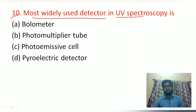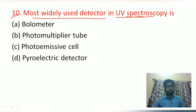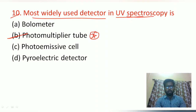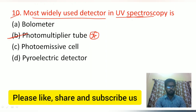The tenth question: the most widely used detector in UV spectroscopy is the photomultiplier tube. It is very important to understand the working principle of the photomultiplier tube. That is the end of this video — hope you liked it. Please like, share, and subscribe to our channel. Thank you.